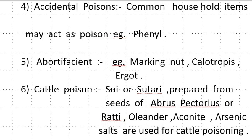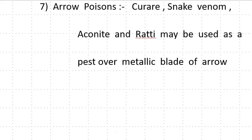Accidental Poison — common household items may act as poison. Abortifacient poisons include Marking Nut. Cattle Poison, also called Sui or Sutri, is prepared from the seeds of Abrus Precatorius or Ratti. Oleander, Aconite, Arsenic and Salt are used for cattle poisoning. Arrow Poison — Curare, snake venom, Aconite and Ratti may be used as a paste over the metallic blade of an arrow by tribals.